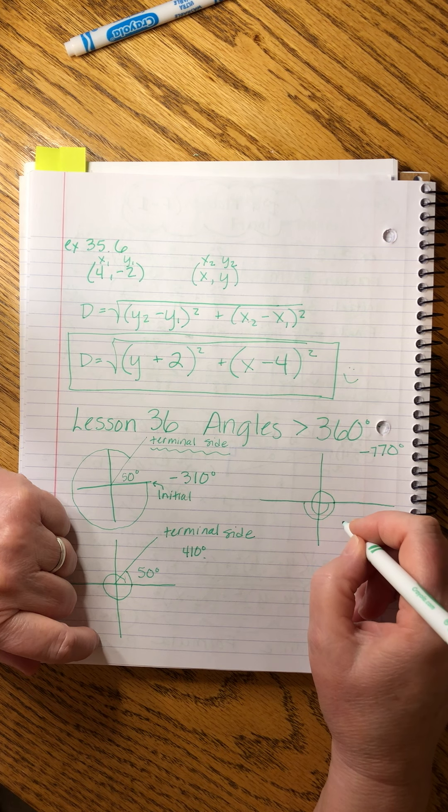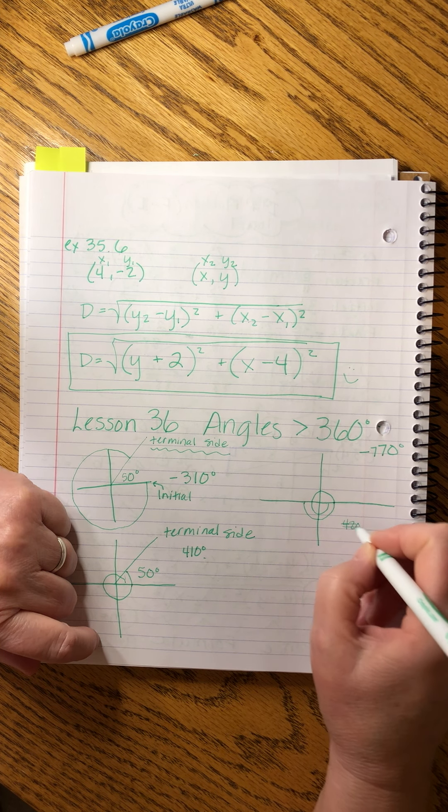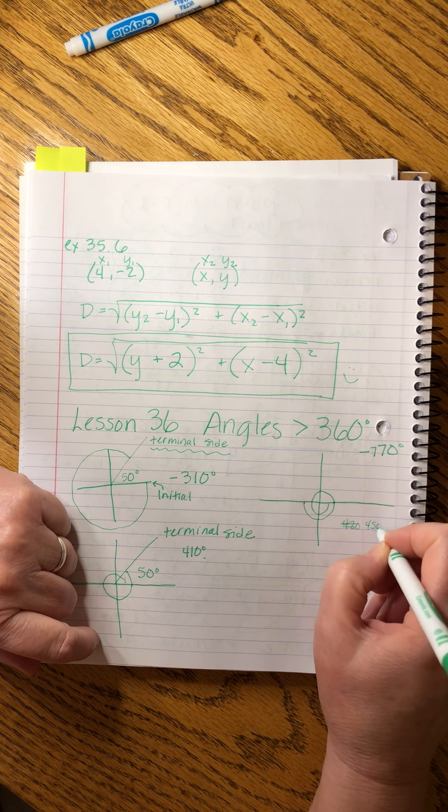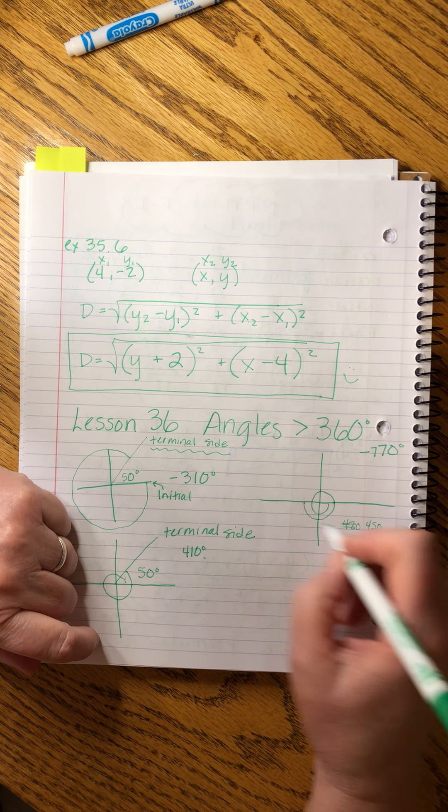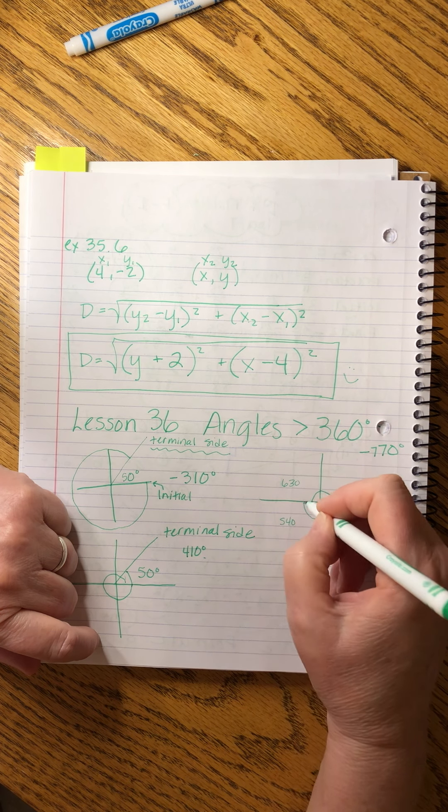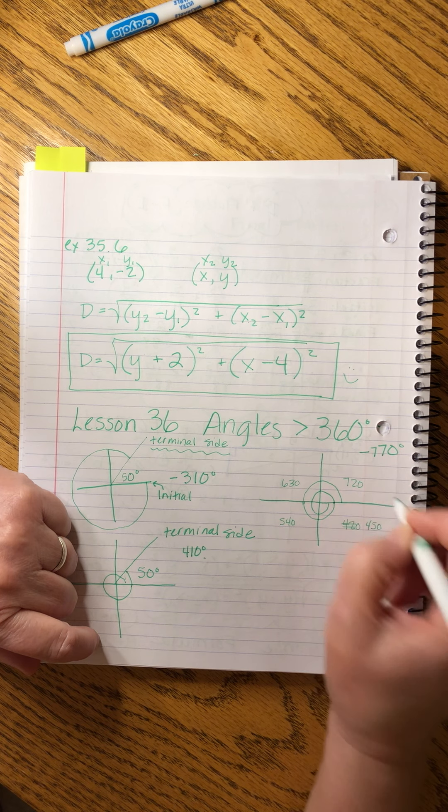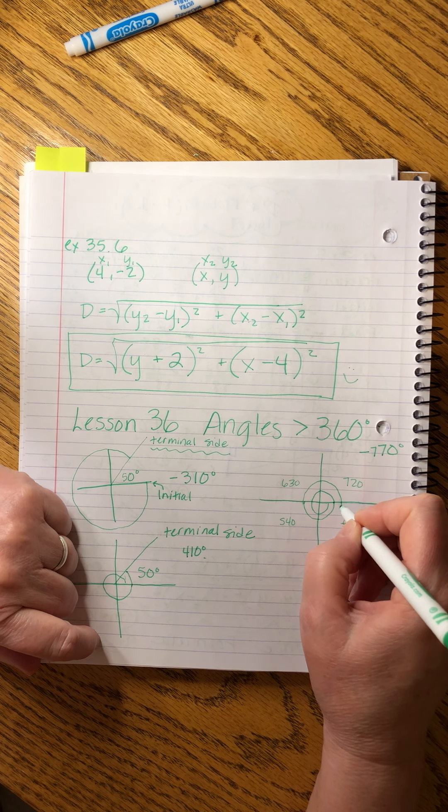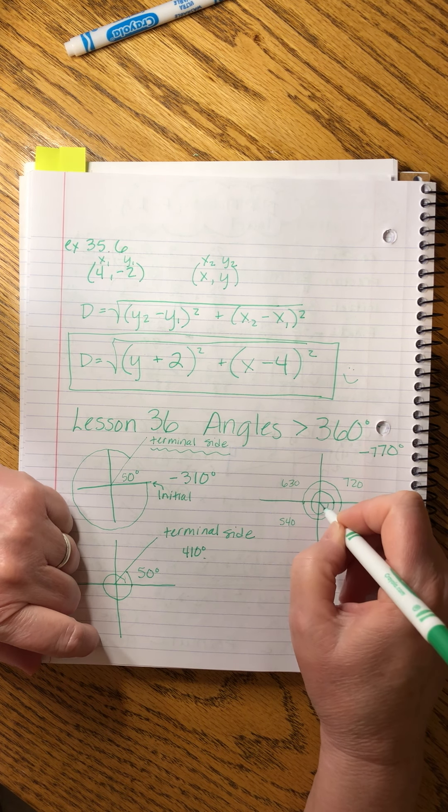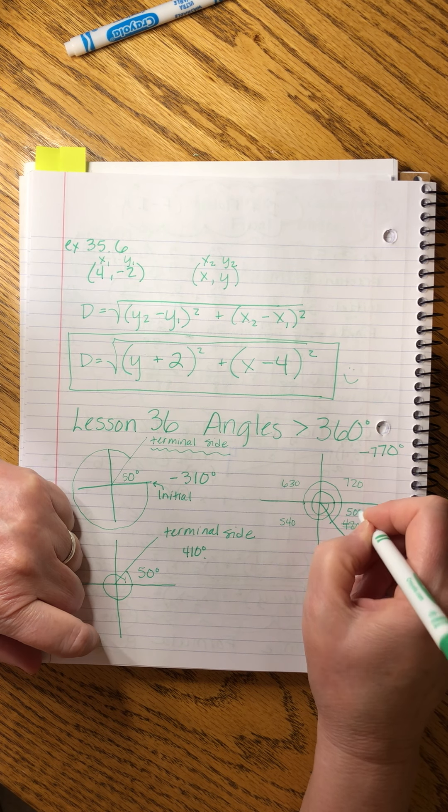360 plus 90 is 450. This is 540, this is 630. We get all the way back over here, 720. We're still going strong. We still need 50 more. So this ends up being a 50 degree angle here.